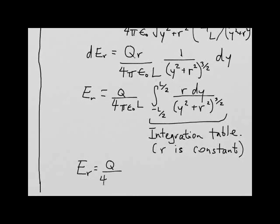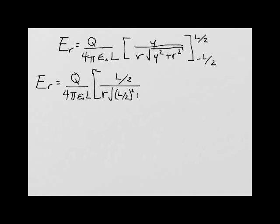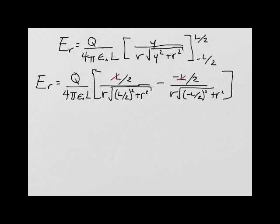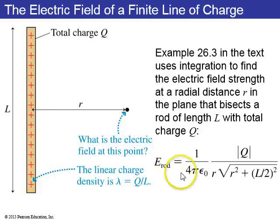Using the integral result and keeping the constant Q over 4 pi epsilon naught L, we evaluate y divided by r times the square root of y squared plus r squared from negative L/2 to positive L/2. Plugging in and simplifying, the L's cancel and we get the electric field Er equals 1 over 4 pi epsilon naught times Q divided by r times the square root of (L/2) squared plus r squared.